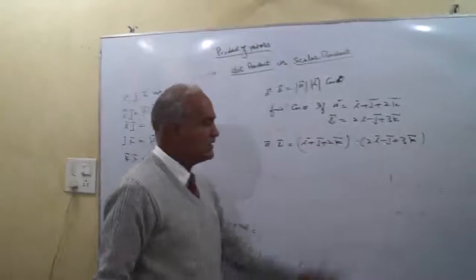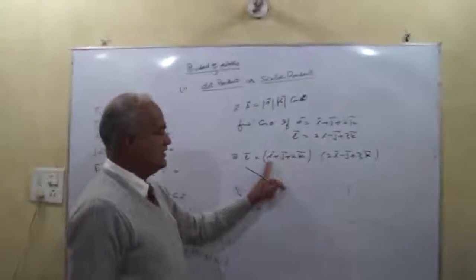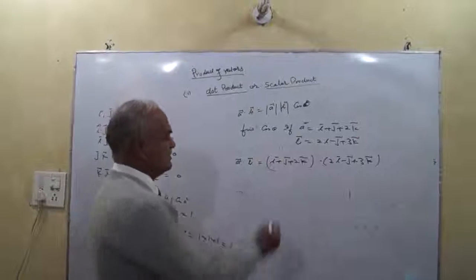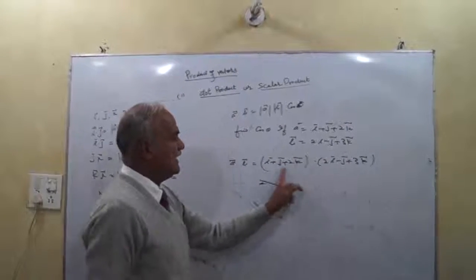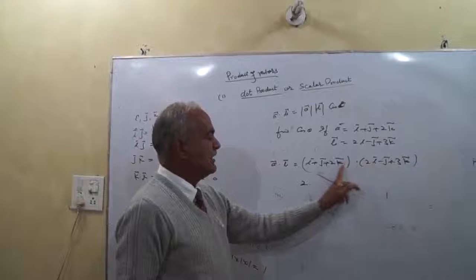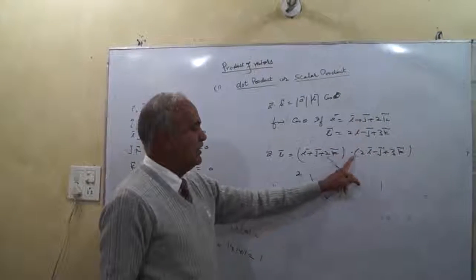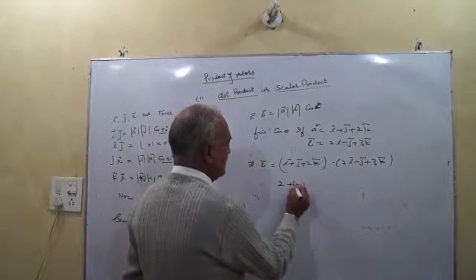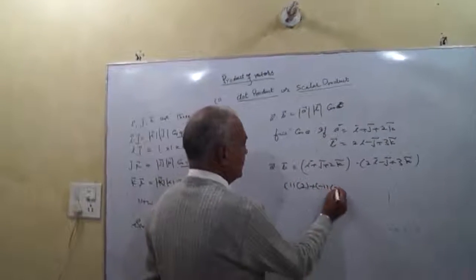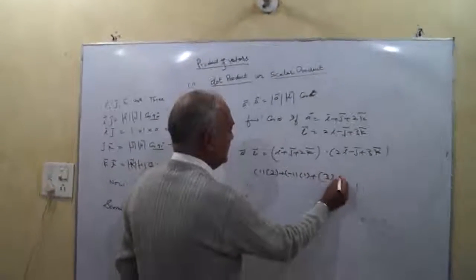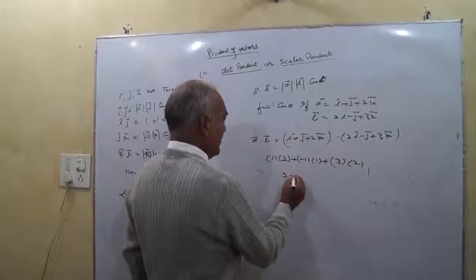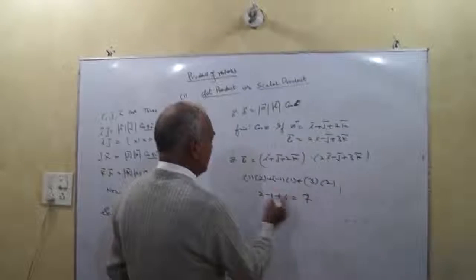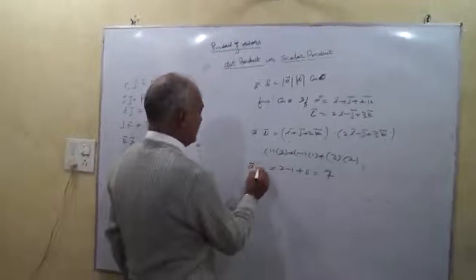While making the dot product, I with I: the coefficient of I multiplied by coefficient of I equals 1 times 2, which is 2. I with J gives 0, and I with K dot product gives 0. Then J with J: minus 1 times 1 is minus 1. Plus K with K: 3 times 2 is 6. So A dot B equals 2 minus 1 plus 6, which equals 7.